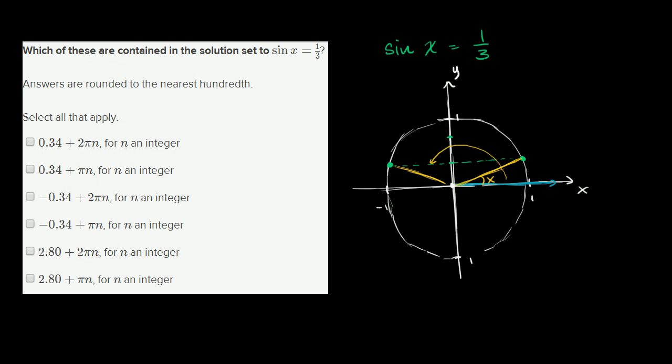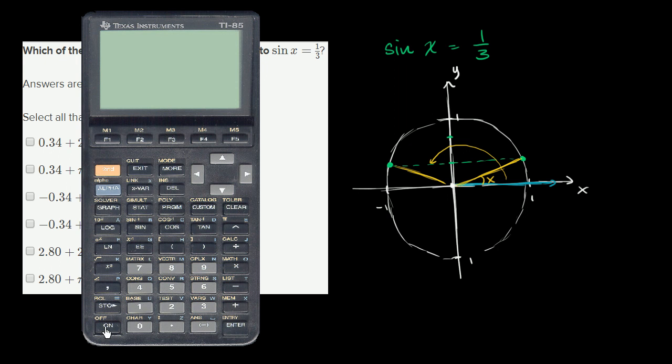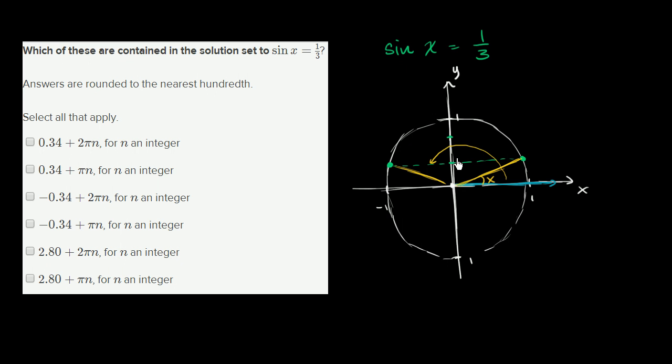Let's take our calculator out and take the inverse sine of 1/3. We have to remember what the range of the inverse sine function is—it gives us a value between negative π/2 and π/2, sticking us in the first or fourth quadrant. We see that gives us 0.34 if we round to the nearest hundredth. That's this angle right over here. It's a positive value, greater than 0 but less than π/2. π is 3.14, so π/2 is 1.57. This is 0.34 radians.